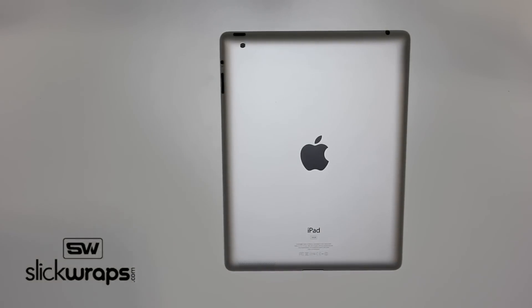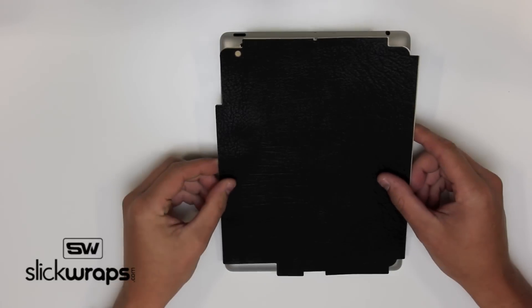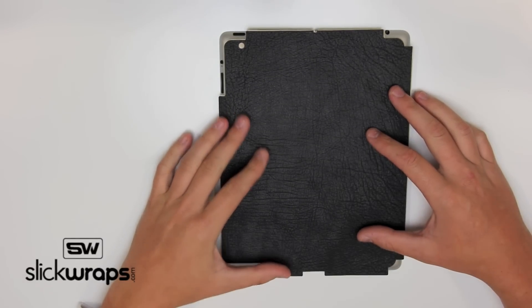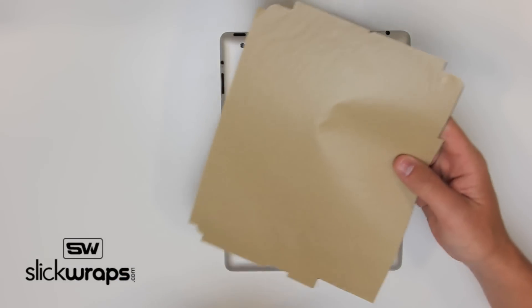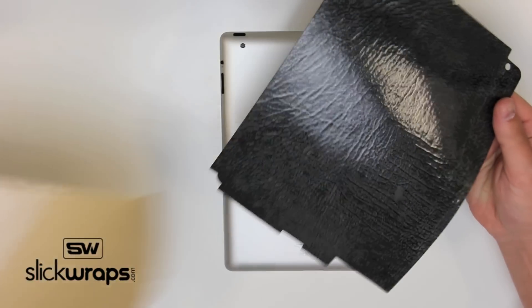Now take the Slick Wraps leather back and line it up prior to installation. Now you're ready for installation. Take off the paper backing carefully, exposing the adhesive.